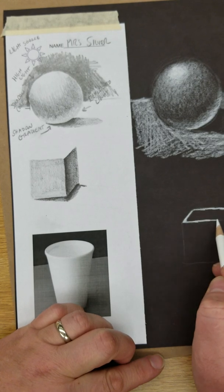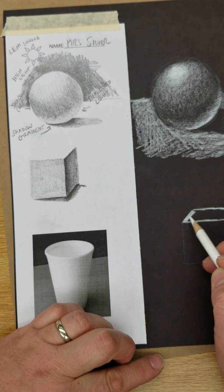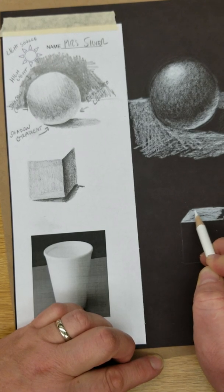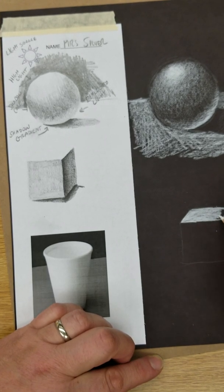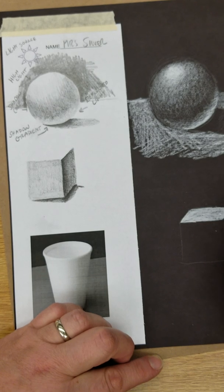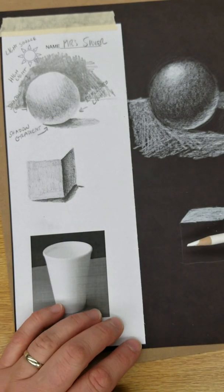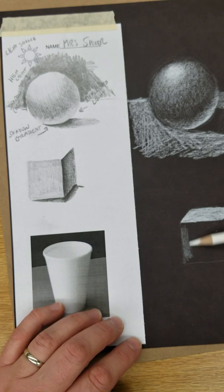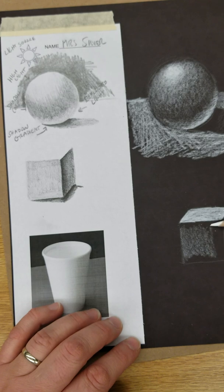So I start with my explicit outline and then go ahead and lose that outline and turn it into an edge just by doing this. And then I know that this is lighter, so I'm going to come in with this and add that right there.